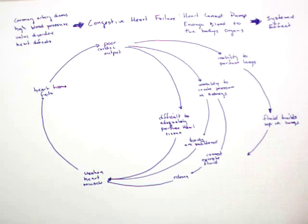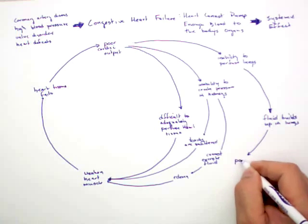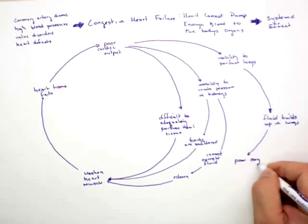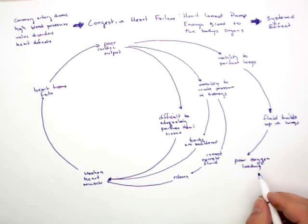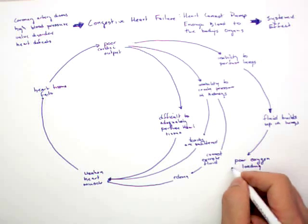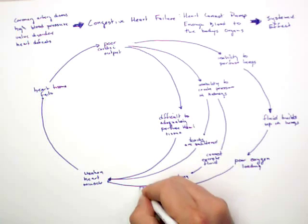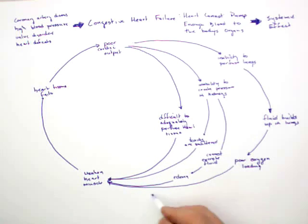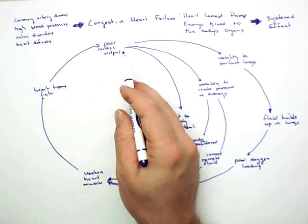If there's fluid in the lungs, it's going to be hard to pick up oxygen. That means that even the fluid that does go through the lungs is not going to be able to pick up oxygen because there's fluid in the lungs and there's not a nice air-blood interface. So the blood that does go through the lungs is not going to be very well oxygenated. That's going to weaken heart muscle, cause heart tissue to fail, and cause poor cardiac output.